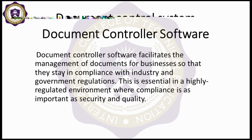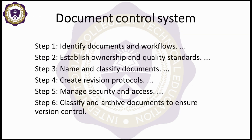For document control systems, the key steps are: identify documents and workflows, establish ownership and quality standards, name and classify documents, create revision protocols, manage security, and classify and archive documents to ensure version control. The first step is to identify the documents, then assess their quality, name them, and create a second copy for archiving.